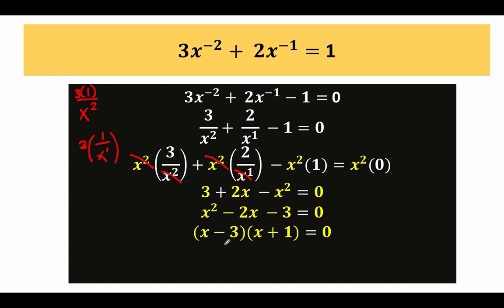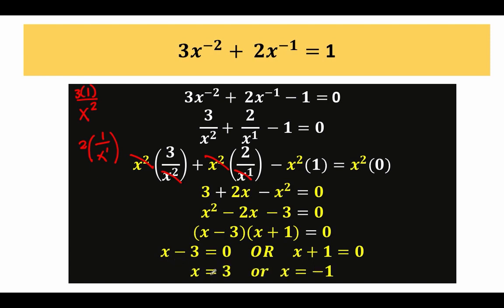The factors are (x minus 3) and (x plus 1) equals 0. Since the product of these two factors equals 0, one of the factors must be 0: either the first factor equals 0 or the second factor equals 0. Solving for x, we get x equals positive 3 or x equals negative 1. These are our two solutions for the given problem.